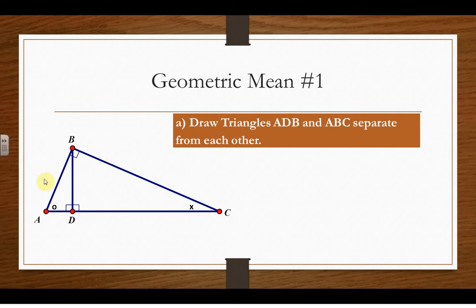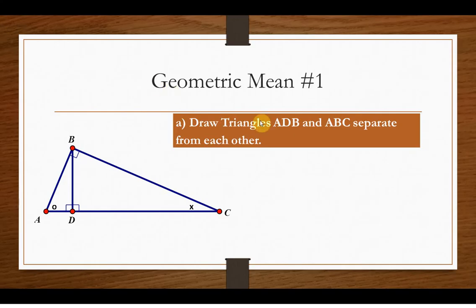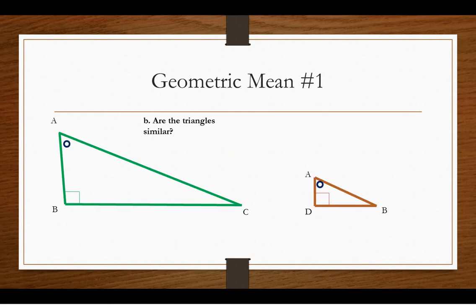So I'm hoping you're seeing a large right triangle, a medium-sized right triangle, and a small right triangle. So it's whenever you see this picture, that's going to happen. So we're going to use the geometric mean. All right, so first, we're going to draw triangles ADB, which is this little guy, and ABC, which is the big guy, separate from each other. So if I do that, here we go.